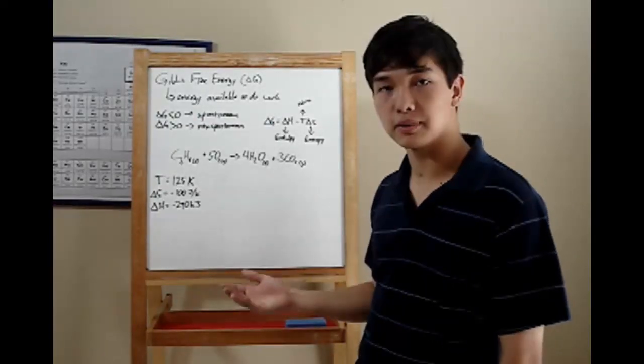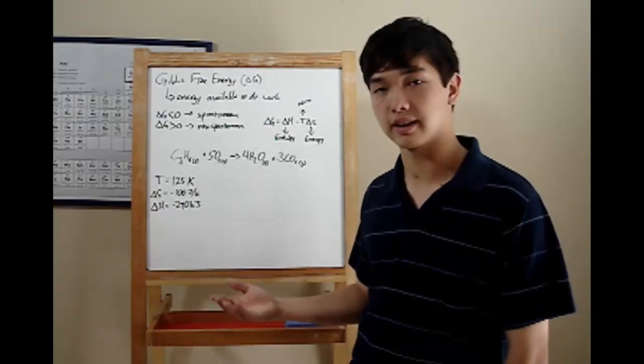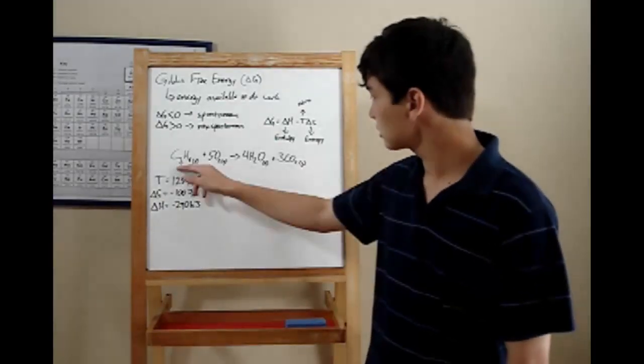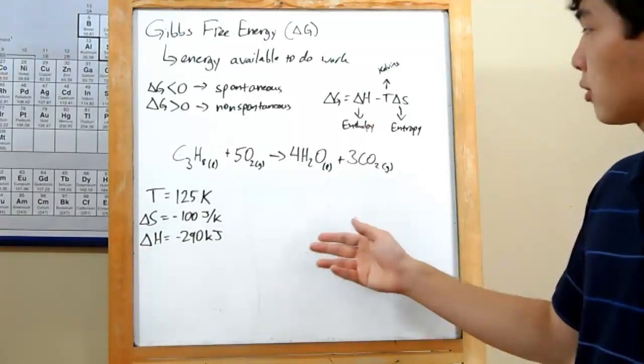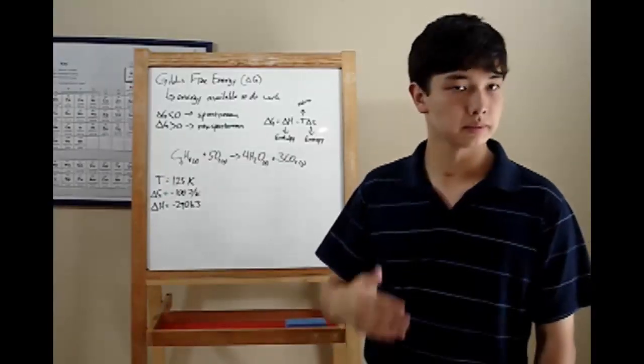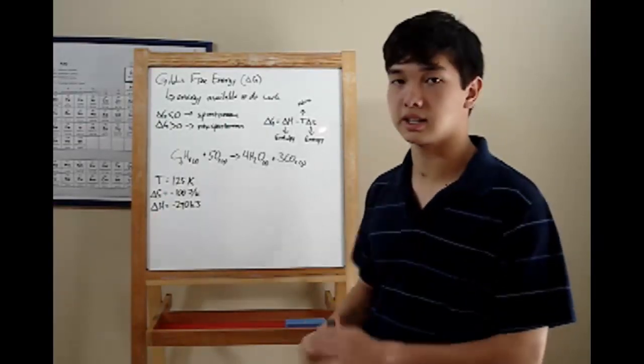Your chemistry teacher will probably want you to find the delta G for any number of reactions and then tell whether or not it's spontaneous. Let's take this particular one: C3H8 plus 5O2 goes to 4H2O and 3CO2. If we were asked to find out whether or not this is spontaneous, all we need to do is calculate Gibbs free energy.